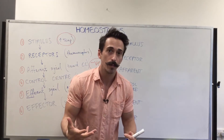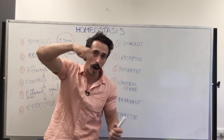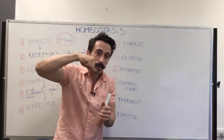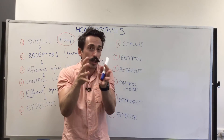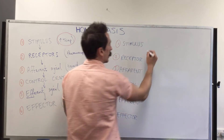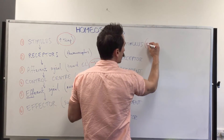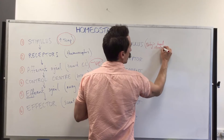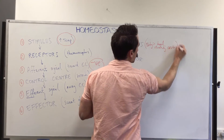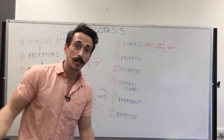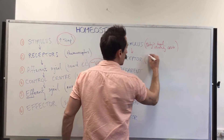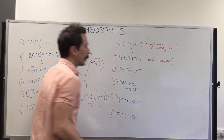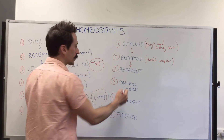Let's think of an example — a mother is giving birth. During labor, the child's head is pushing its way through the cervix. The cervix is the neck of the uterus. As the head pushes its way through, it stretches. So the stimulus is the baby's head stretching the cervix. That stimulus needs to be picked up by receptors — stretch receptors in the cervix.